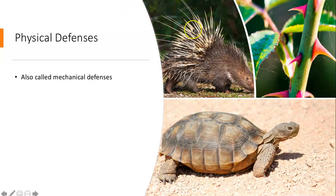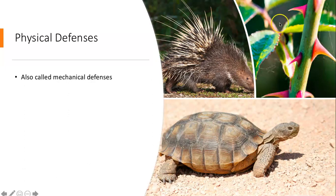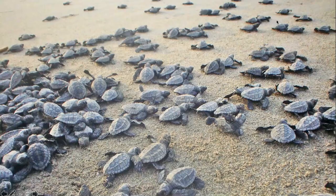What happens is you go to grab or bite a porcupine — these spines stick into you, it walks away, and you are left with a face full of spines. Really, really good defense. We also see plants that have thorns to protect them from herbivory — to protect them from being eaten by insects or animals. These spines work really well as a physical defense.